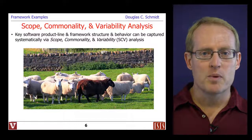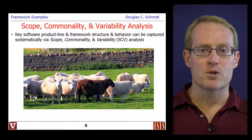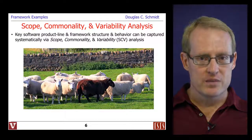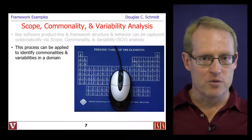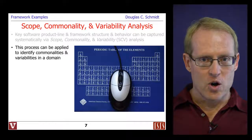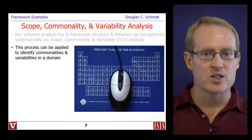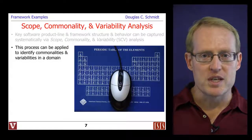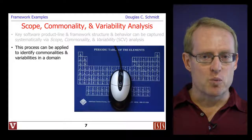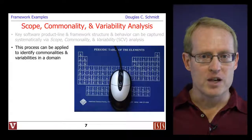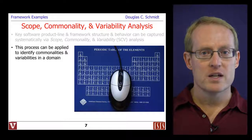So let's talk now about scope, commonality, and variability analysis. Key software product line and framework structures and behaviors can be captured using this method. It's basically a way to look for things that are going to be common and therefore fixed and stable and worthwhile to build your overall solution around, as well as identifying things that can change — the so-called variabilities. One of the key themes is to find ways to take the variabilities and provide a common interface to them so that when they change, it doesn't break other parts of the product line or the applications or the frameworks in order to achieve systematic reuse.